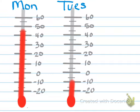In the next example, we're going to talk about temperatures between Monday and Tuesday. On Monday, the high was 45 degrees Fahrenheit, and on Tuesday it dropped down to negative 10 degrees Fahrenheit. The question is: what is the difference in temperatures between Monday and Tuesday?